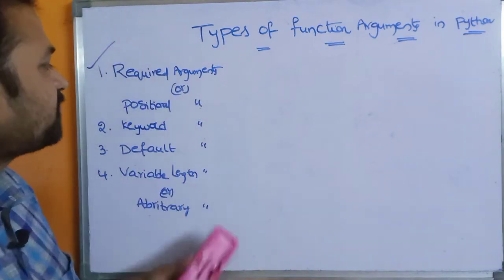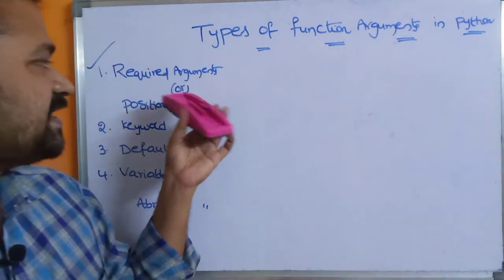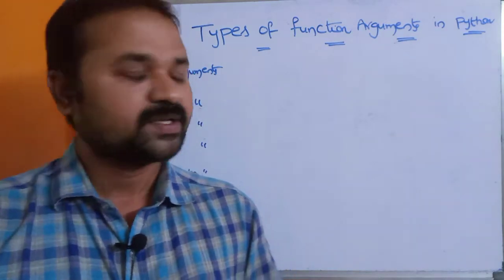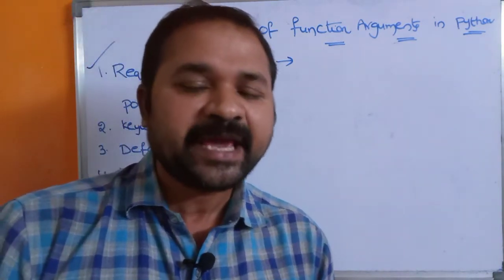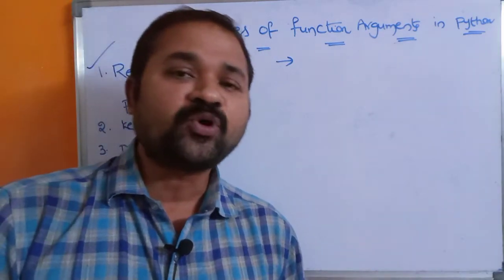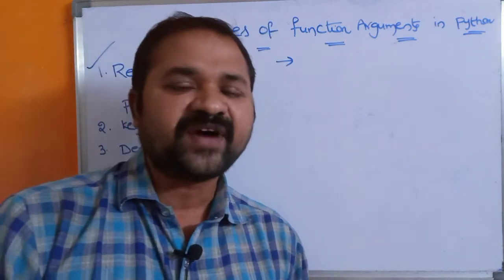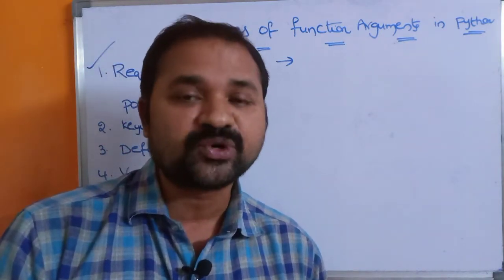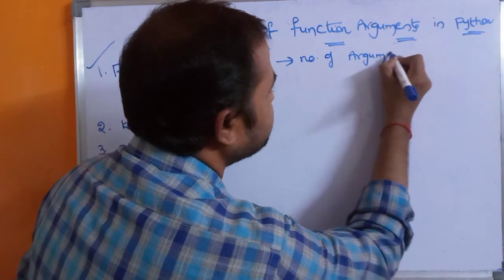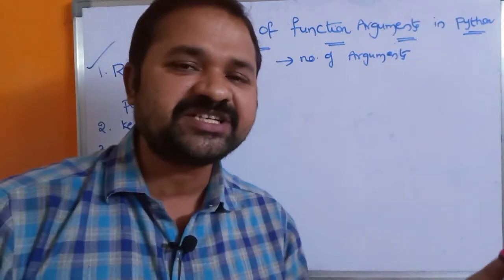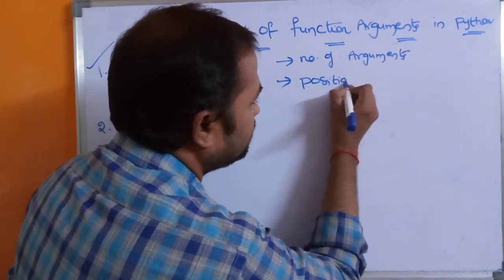The first one is required argument or positional argument. Arguments can also be called as parameters. In required arguments, we have to follow two points. The first point is the number of arguments must be same in the function definition and function call.